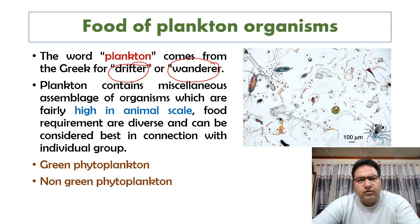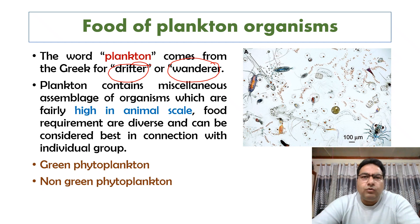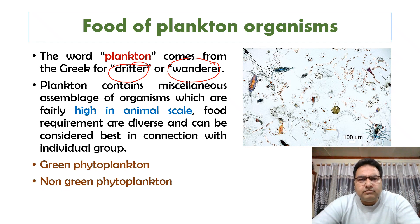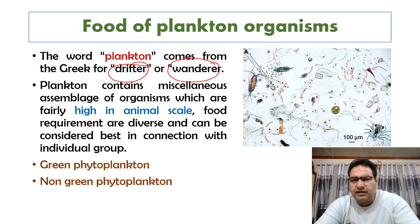Scientists have tried to classify plankton in different ways — on the basis of size, on the basis of type, and how long they spend drifting. Basically, we categorize them into two major groups: phytoplankton and zooplankton.